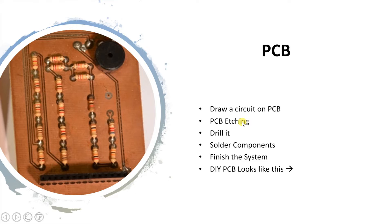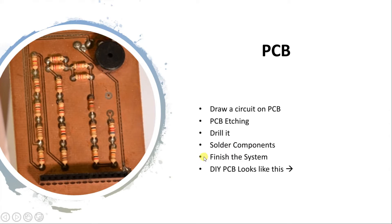In the etching process, all the copper that is unwanted on the board is removed through a chemical process. Usually we use FeCl3 solution to do that. After etching, we drill the PCB according to the holes required, then solder the components, and then finish the system.